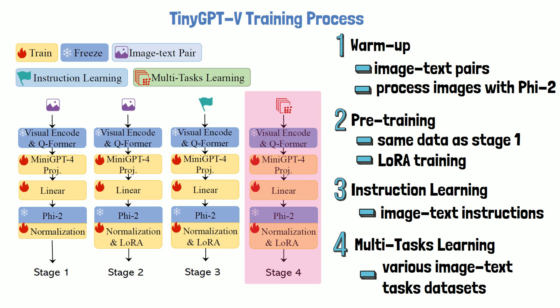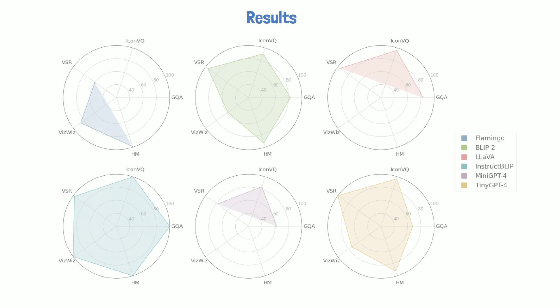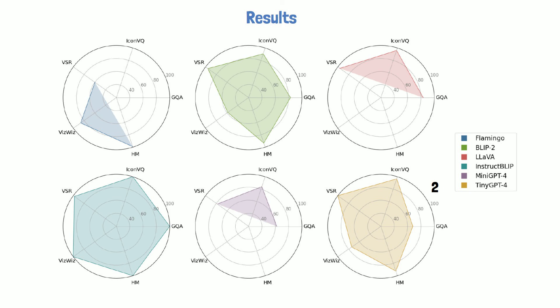So how does TinyGPT-V perform compared to other models? From the charts in the paper, we can see performance across multiple models on various vision-language tasks. TinyGPT-V has 2.8 billion parameters, while the other models are significantly larger — Flamingo has 9 billion and the others have 13 billion. Despite its smaller size, TinyGPT-V achieves impressive results comparable to larger models across various tasks.